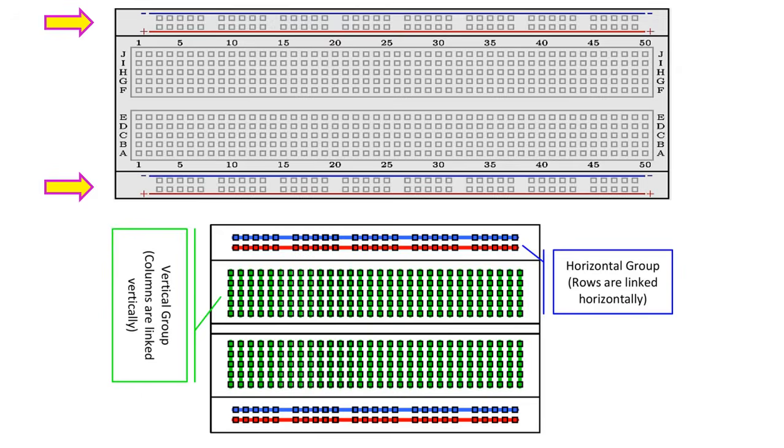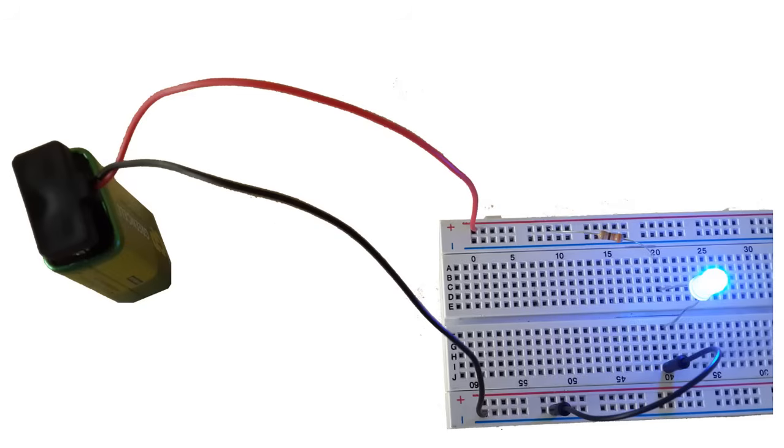After it is inserted, each pin of the integrated circuit will have a row of electrically continuous holes connected to it. In this way, you can quickly build a circuit without having to do any soldering or twisting wires together. Simply connect the parts that are wired together into one of the electrically continuous rows.